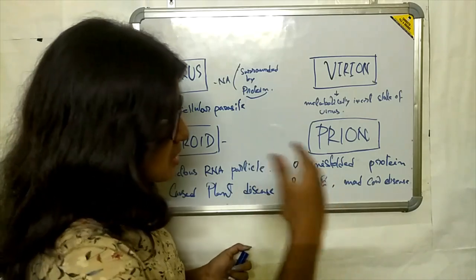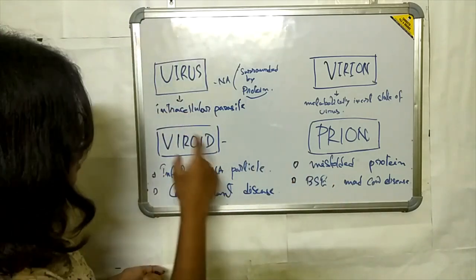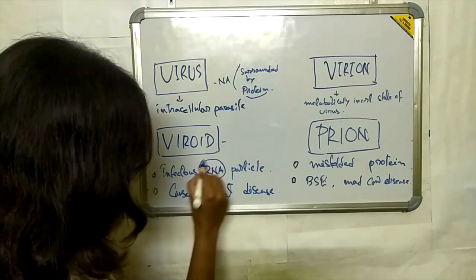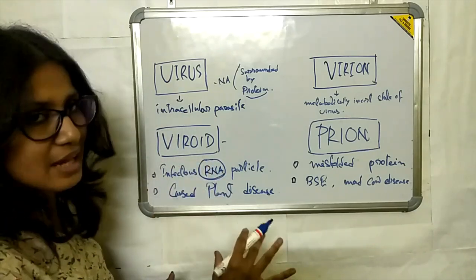They are an inactive form outside the living host. And viroids are RNA. They are RNA which infect plants, no DNA.